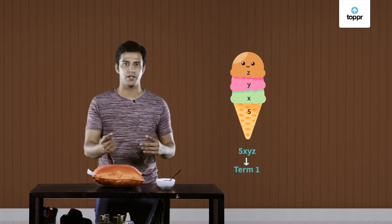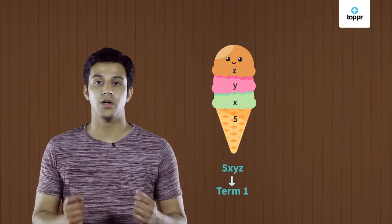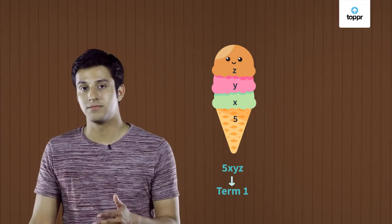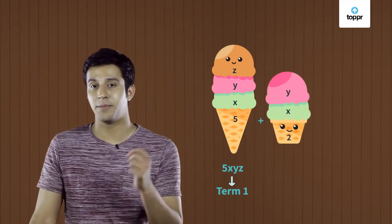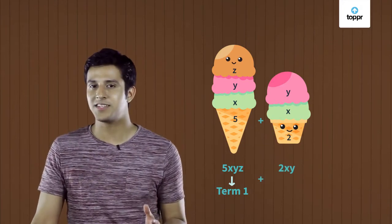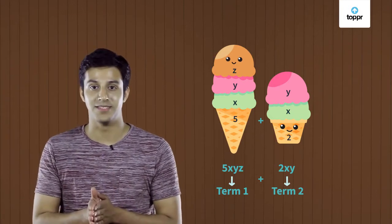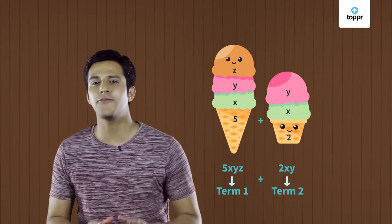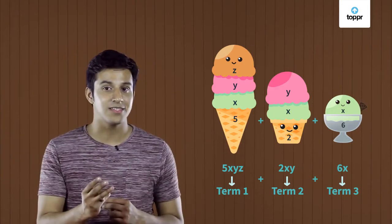So, let's say you order a three-scooped cone ice cream — this would be just one term, right? Because it had nothing else added to it. Expressions that have just one term are called monomials; the word mono means one. What if you order one more, but this time a cup ice cream with two scoops — let's say it represents the term 2xy. How many ice creams do you have now? Two. Expressions that have two terms are called binomials; bi means two. Similarly, if you order a third ice cream, expressions with three terms are called trinomials, and tri means three. All expressions with two or more terms come under what we call polynomials.